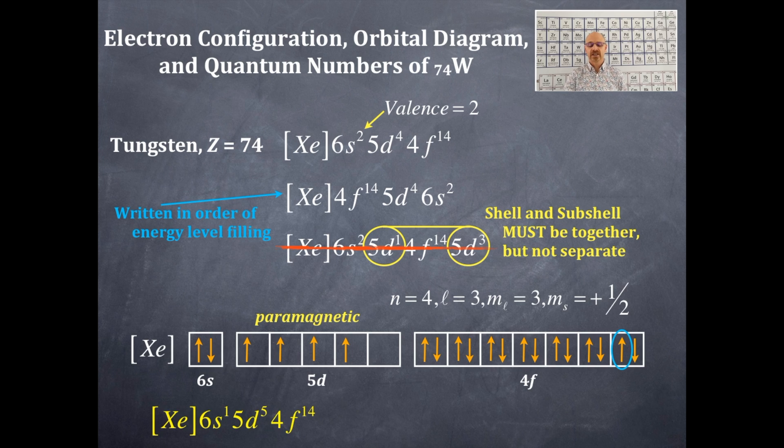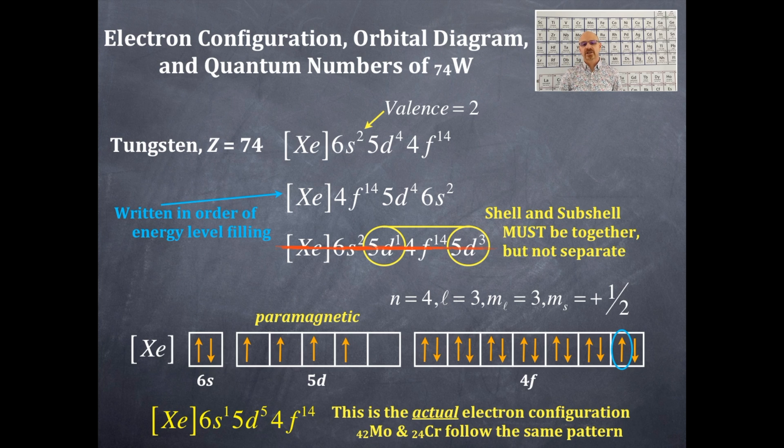Now look at this: xenon 6s¹ 5d⁵ 4f¹⁴. Compare that to the white one I did before. The difference is that the 5d orbital is half-filled. Half-filled and completely filled orbitals are very low in energy. That 6s² electron, one of those electrons, drops down into a 5d orbital because that 5d orbital is interior to the 6s.